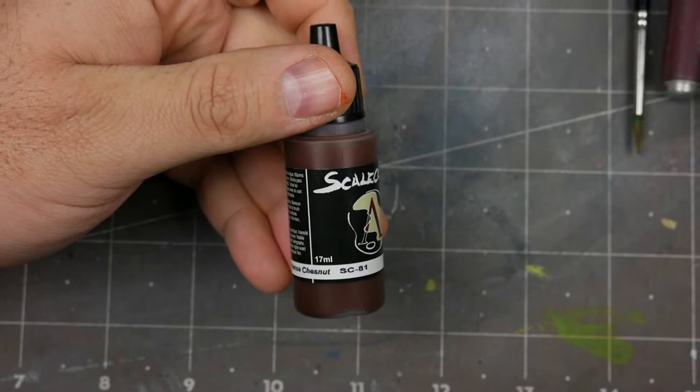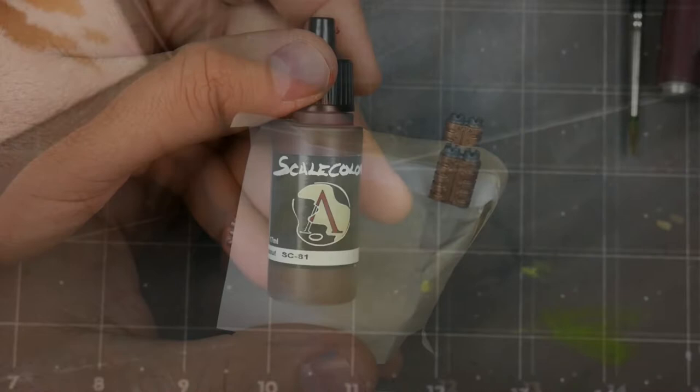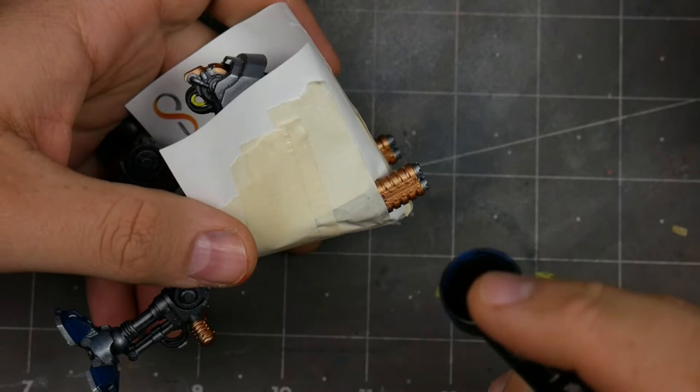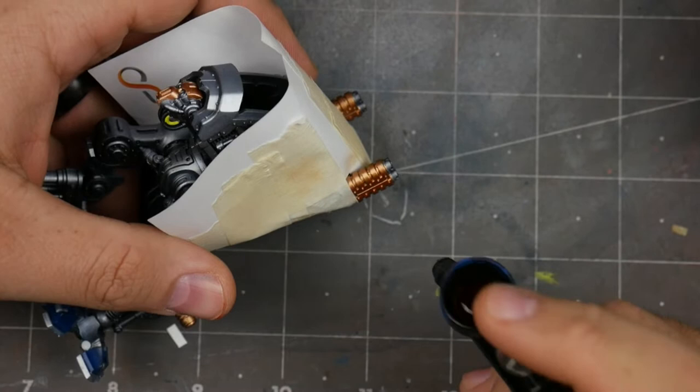So to achieve that brown, I'm going to start off with Scale 75 chestnut ink. I like ink because it's a little transparent. Now I'm going to thin this down heavily—I'm going about 10 drops of flow improver to one half drop of the ink. I'm using my Sotar with a 0.2 needle. The pressure is really low on the airbrush, I'd say 15 maybe 10 PSI.